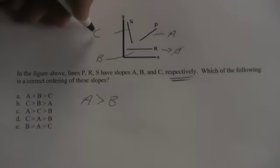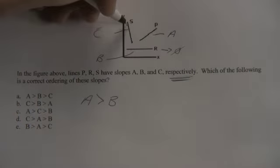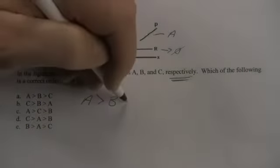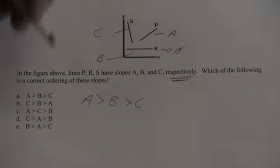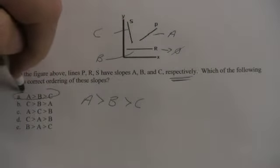And then the smallest slope is C because it's a negative line. It's going down as you go from left to right. So we put that in. As we look at the choices, it becomes clear that choice A is correct.